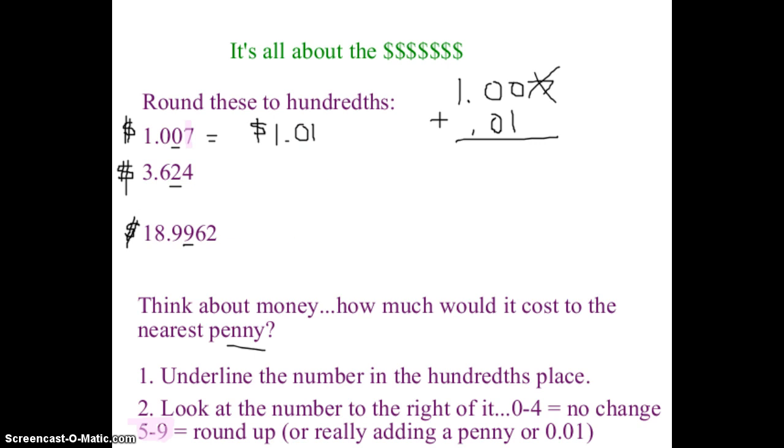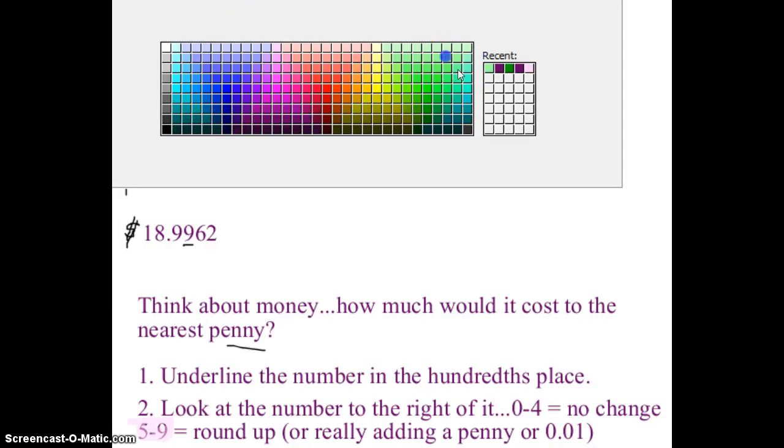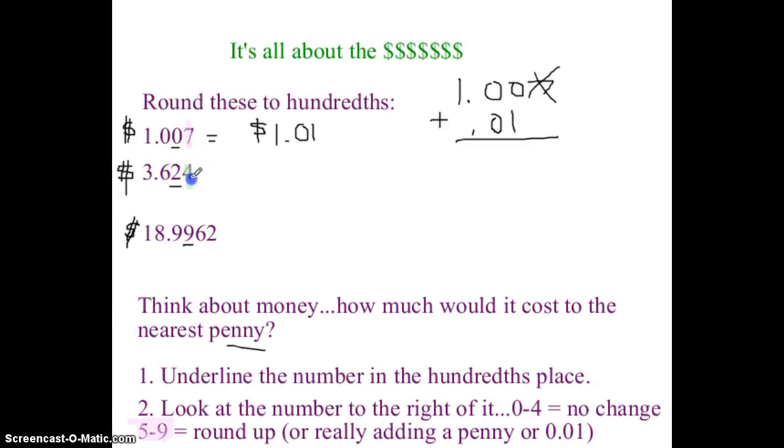All right. What about our next one? So I have 3.624. So let's get a different color. The four. Does the four make the two round up or stay the same? Well, if it's zero through four, the digit to the right of the hundredths place, which is called the thousandth place, but you don't need to know that for this class, if it's zero to four, you leave it alone. So how much would this item cost? $3.62.